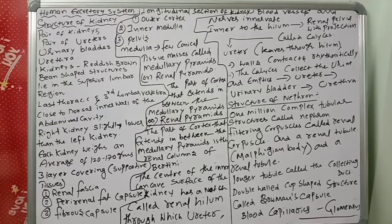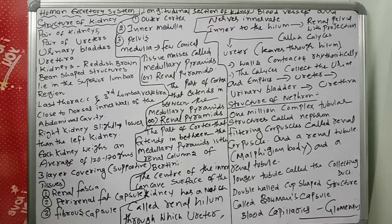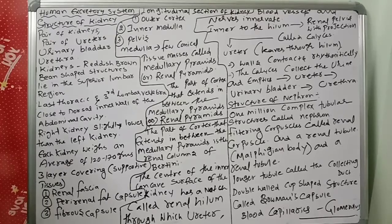Before going to the human excretory system, first of all, what is excretion? That one we have to remember. Excretion means elimination of nitrogenous wastes to maintain ionic balance. That is called excretion.